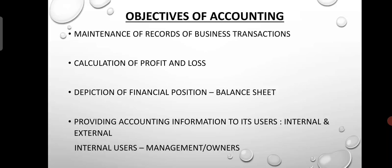The next objectives include Providing Accounting Information to Its Users. There are two types of users: internal users and external users. Internal users include management. Internal users are those within the business who use accounting information to manage and gain profit in their own business.